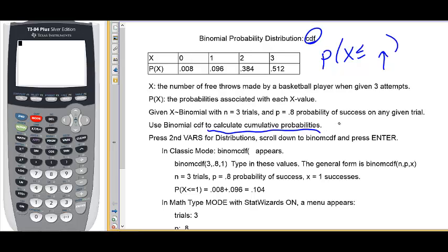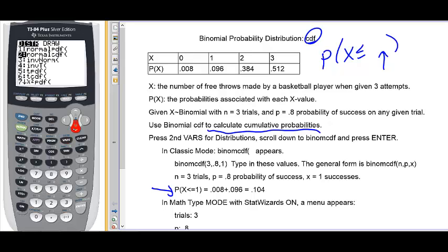So, first example, probability that X is less than or equal to 1. Again, we're going to do this on the calculator. I'm going to go to 2nd, distributions, scroll down to Binomial CDF this time.